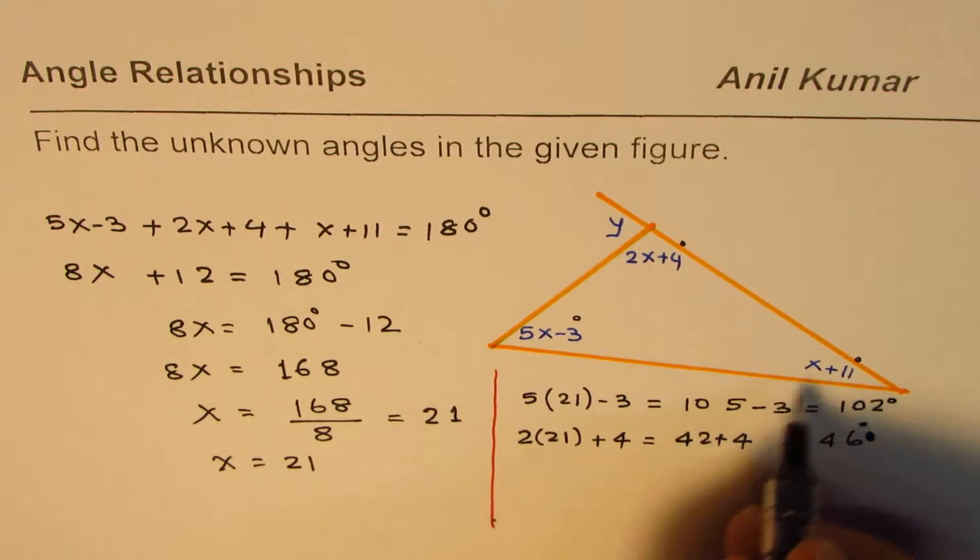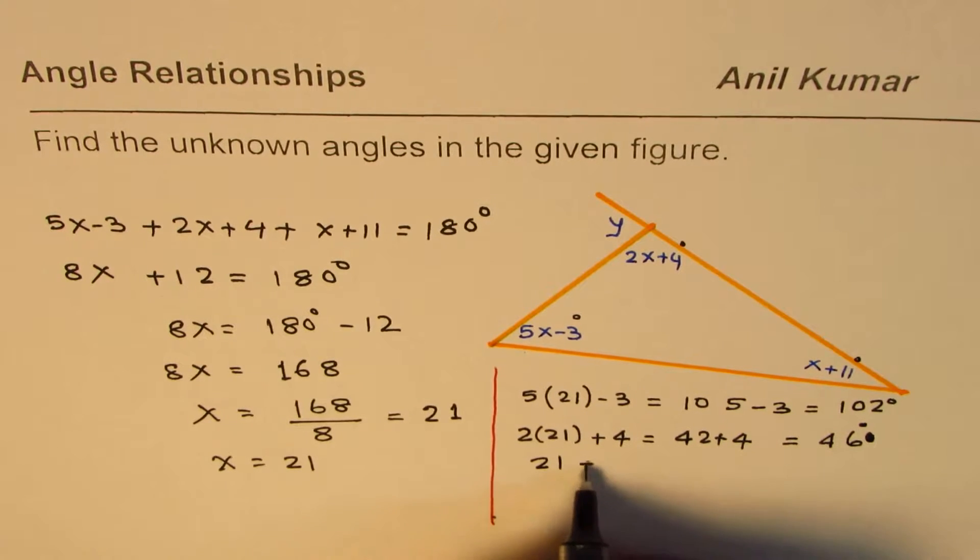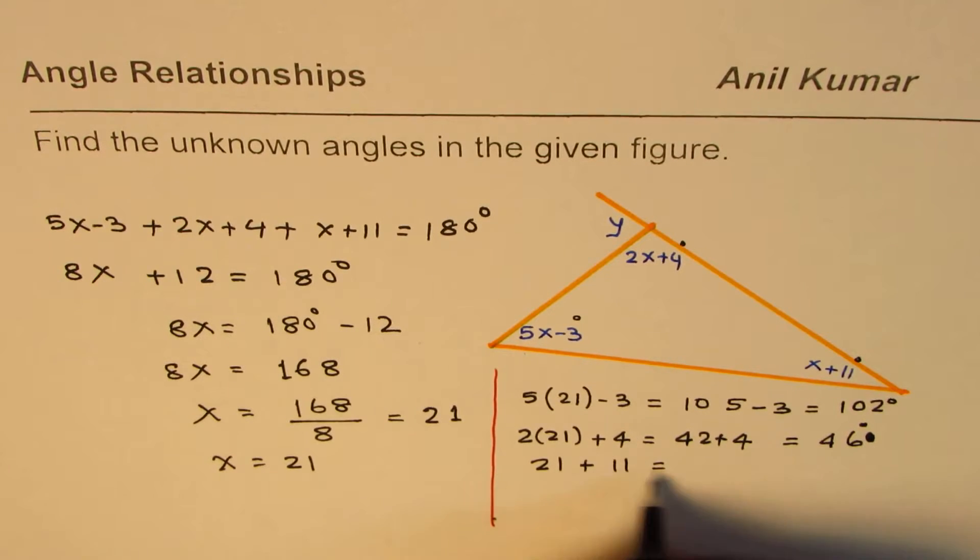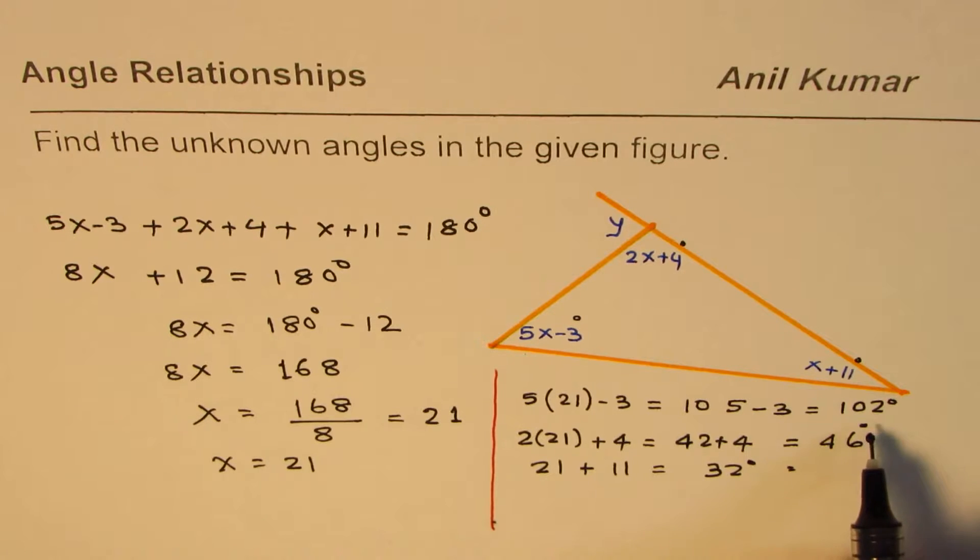And then we have x plus 11, which x is 21, 21 plus 11, and that gives you 32 degrees. So this is 32 degrees. Now, if you add them up, you do get 180. So if you add 32 to this, you do get 180, so that answer is correct.